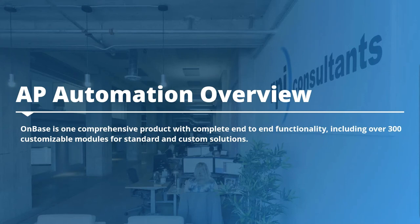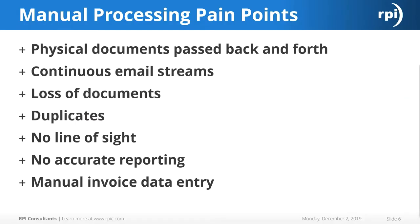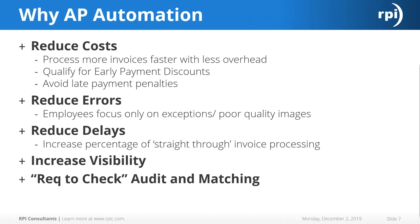For the AP automation overview — most of you probably know what it is, but for those who aren't familiar, the reason we want to move to AP automation is because of the many pain points in manual processing. Physical documents are passed back and forth between departments, users, and locations. There are continuous email streams, loss of invoices, duplicate invoices, no line of sight, no accurate reporting, and manual invoice data entry is a very large pain point for both time and mistakes.